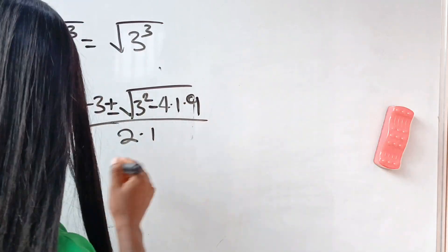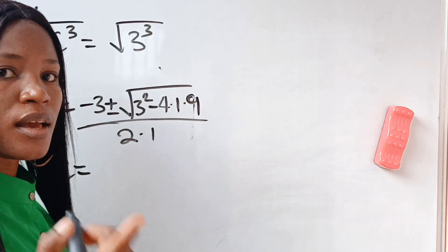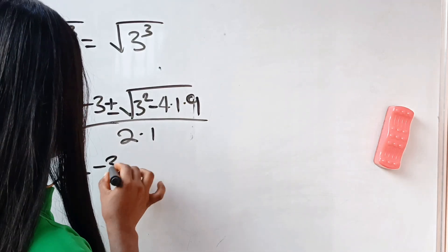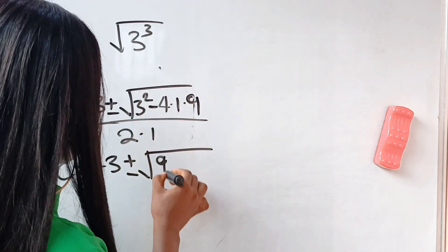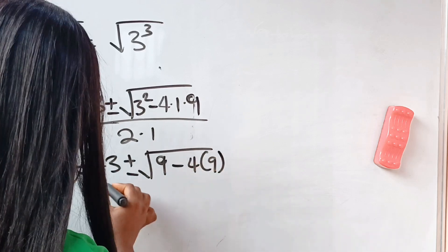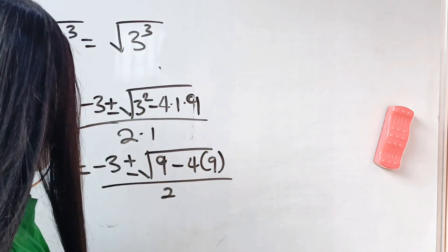So let me clean everything now. So it simply means that c is equal to minus 3 plus or minus square root of, we have 3 squared is 9, minus 4 multiplied by 9, divided by 2.